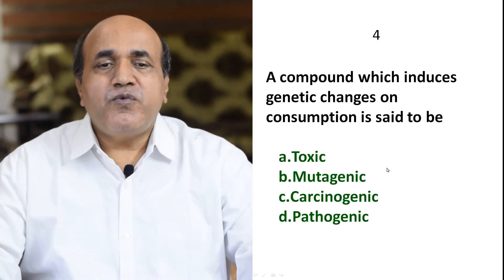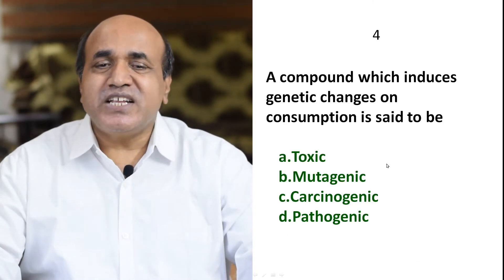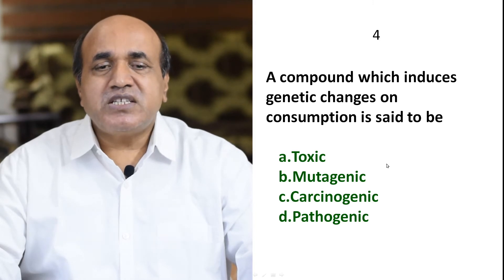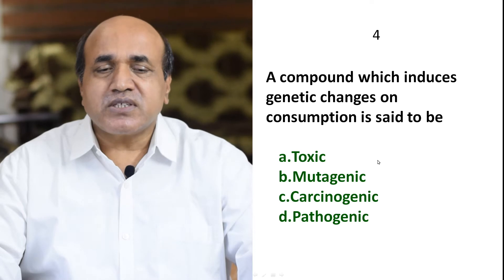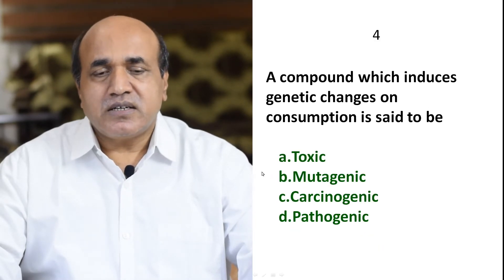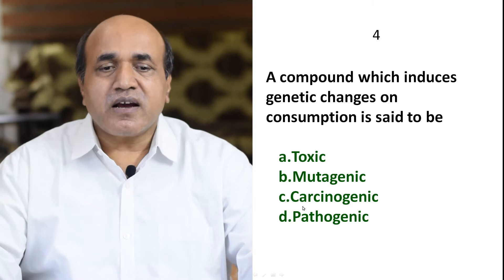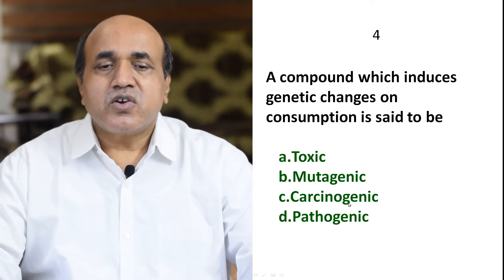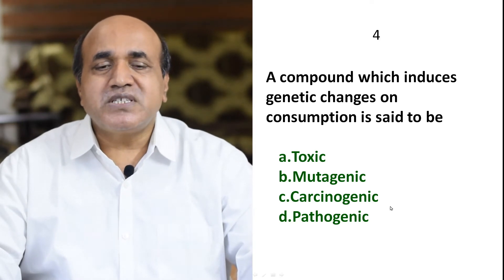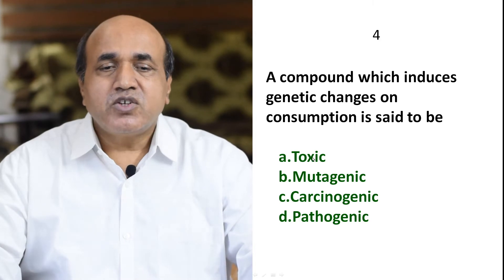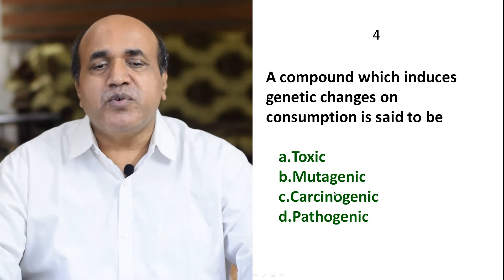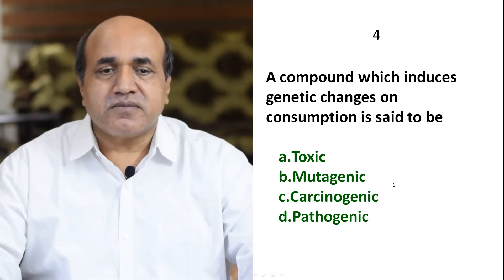Question 4: A compound which induces genetic changes on consumption is said to be — toxic, mutagenic, carcinogenic, or pathogenic? Genetic changes come from mutagenic compounds. Toxic relates to metabolic processes, carcinogenic means cancer-related, and pathogenic relates to viruses or bacteria. So genetic changes means only mutagenic. B is the correct answer.